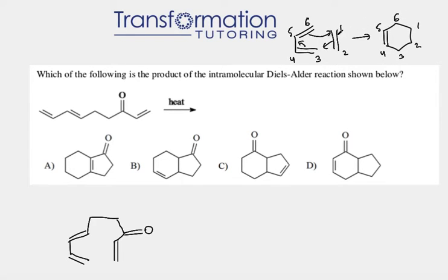We can see that when we have a diene and dienophile, we conduct the Diels-Alder reaction, and the product we get is cyclohexene. You can number the carbons any way you'd like, but you can follow my numbering as well.